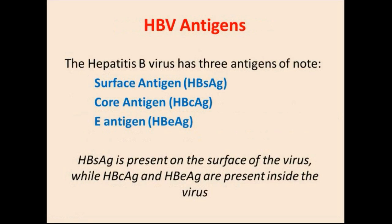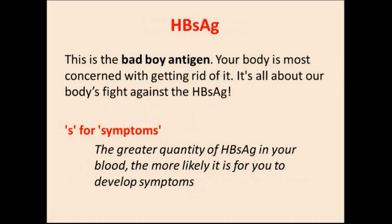Next, we cover the hepatitis B virus itself. The hepatitis B virus has three antigens of note: the surface antigen, the core antigen, and the E antigen. The hepatitis B surface antigen is present on the surface of the virus, while the core antigen and the E antigen are present within the virus itself. The surface antigen is the bad boy antigen — your body is most concerned with getting rid of it. It's all about our body's fight against the hepatitis B surface antigen. S is also for symptoms, so the greater the quantity of hepatitis B surface antigen in your blood, the more likely it is for you to develop symptoms.